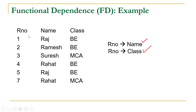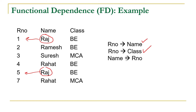Now let us consider the functional dependence between name and role number. We check whether for a given name there is a single value of role number or multiple values. For name Raj, we have two values of role number: 1 and 5. So for a given value of name, we are getting multiple values of role number. Therefore, name to role number is not functionally determined, because for each value of name we should have only one value of role number.